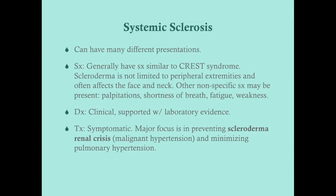The diagnosis is clinical, guided by American College of Rheumatology criteria, and supported by laboratory evidence. These patients will be ANA positive and also anti-SCL 70 positive. Treatment is symptomatic. The major focus in systemic sclerosis is preventing scleroderma renal crisis, which is a malignant hypertension caused by decreased perfusion to the kidneys — similar to bilateral renal artery stenosis. Minimizing pulmonary hypertension is also important, achieved through smoking cessation.